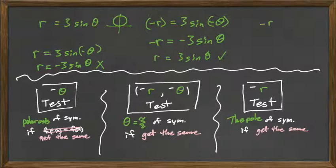Okay, now if I try a negative r test and I plug that in, there's no simplifying, nothing we can do, it fails because we don't get the same thing that we started with.